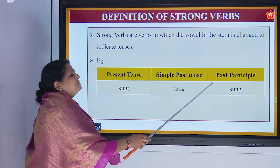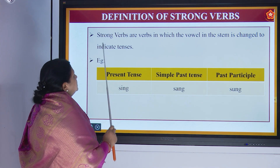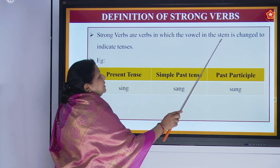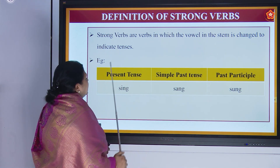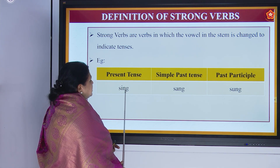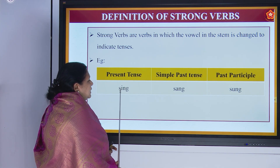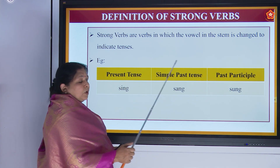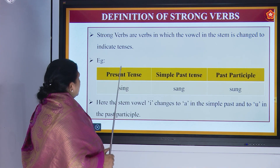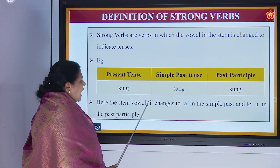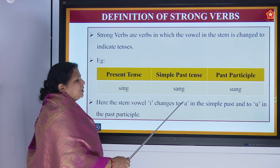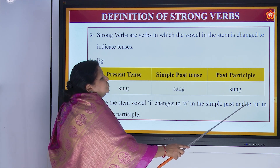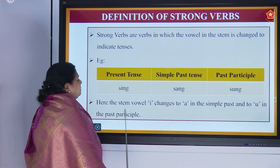For example: sing, sang, sung. Strong verbs are verbs in which the vowel in the stem is changed to indicate tenses. So the vowel in S-I-N-G — the letter I is changed. Your sang will come and then sung. The stem vowel I changes to A in the simple past.